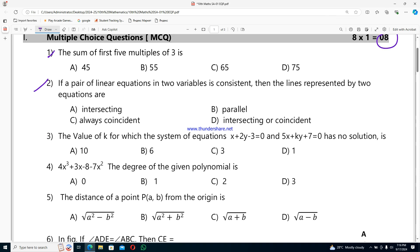Third question: the value of k for which the system of equations x+2y-3=0 and 5x+ky+7=0 has no solution is option A 10, option B 6, option C 3, and option D 1.